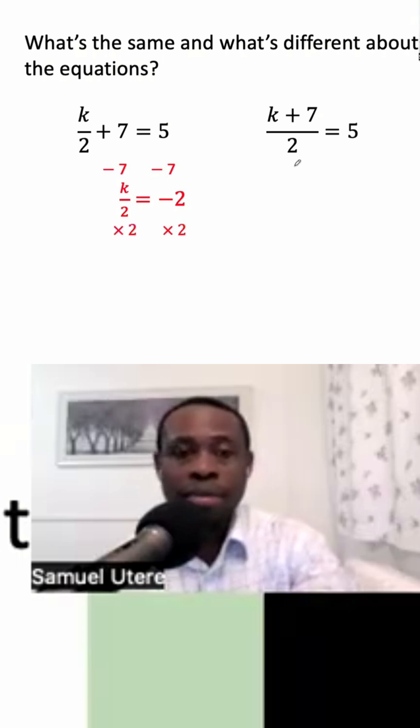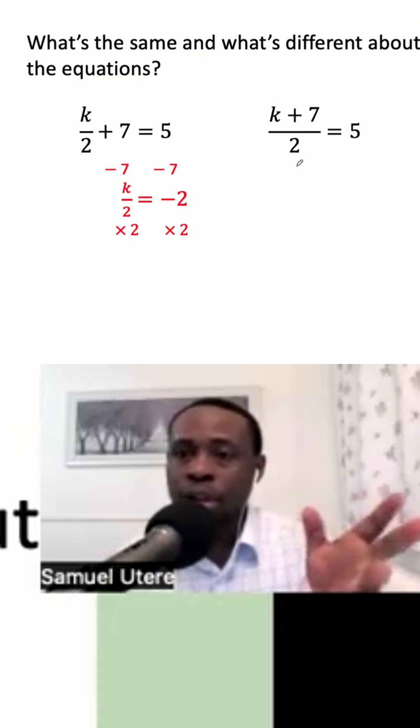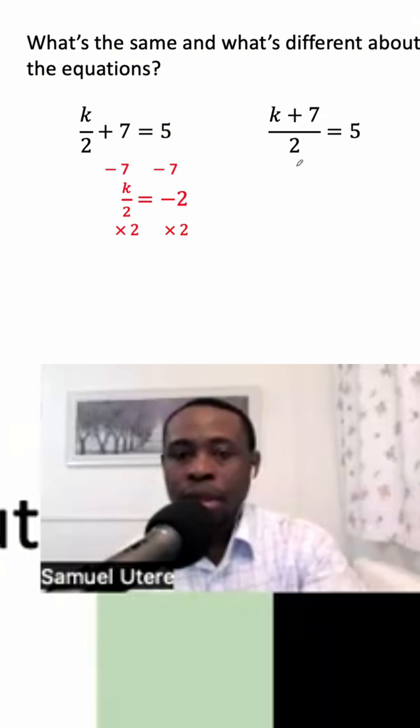Now we have K over two times two. So multiplying by two eliminates dividing by two. They are inverse operations, so they will eliminate each other. Of course, negative two times two will give us negative four.